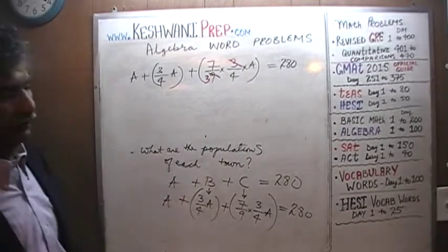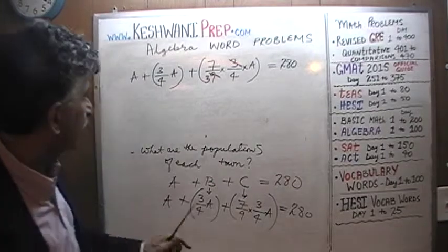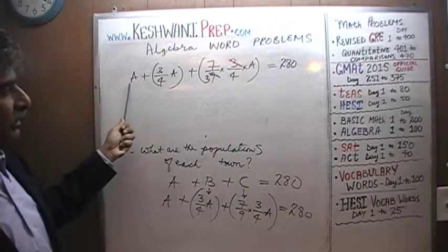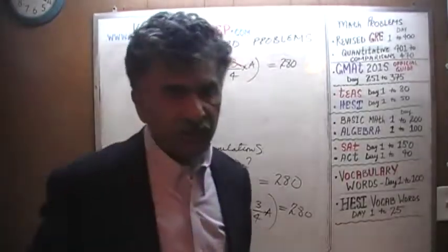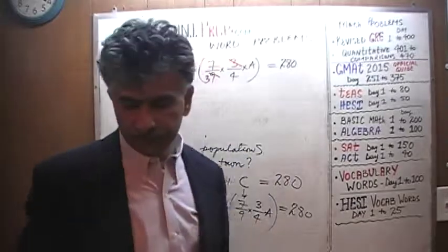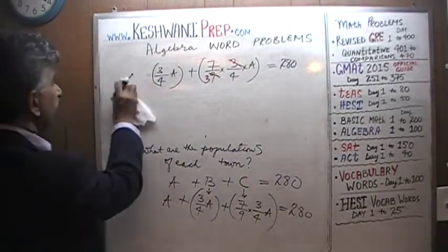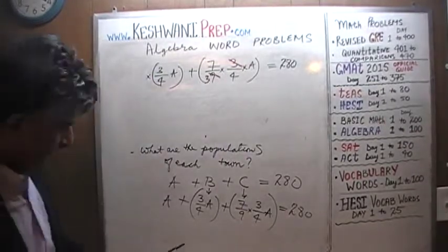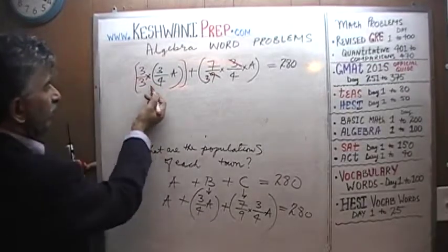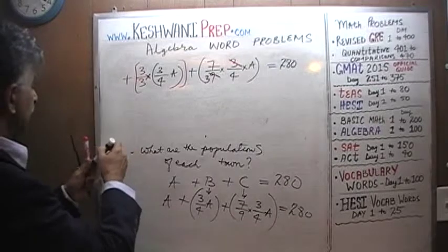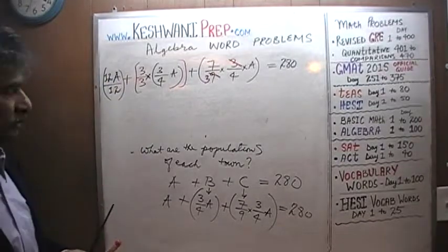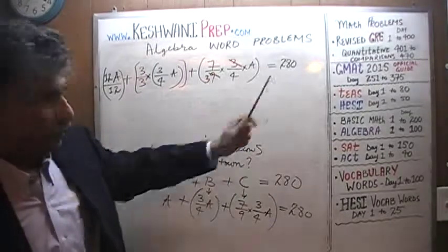So essentially it is seven over twelve. We have a four here — if we can make that four into a twelve, and introduce a twelve in all denominators, we'll have the same denominator throughout the entire equation, and the denominator will cease to play any role. So let's multiply the three-quarters-of-A term by three over three, giving twelve in the denominator. We also multiply A by twelve over twelve, and introduce twelve over twelve for the other term.